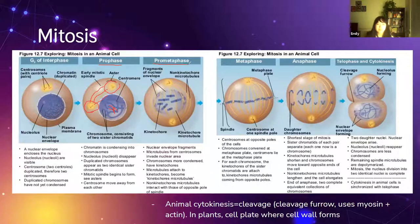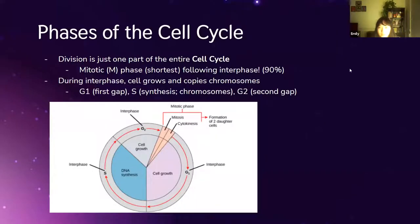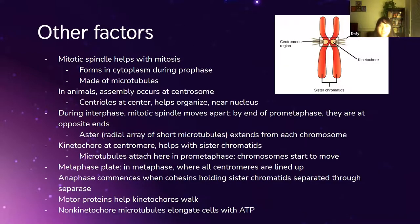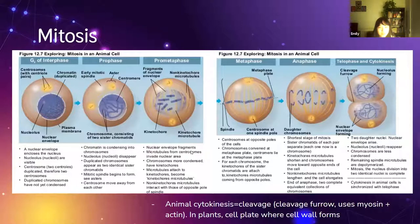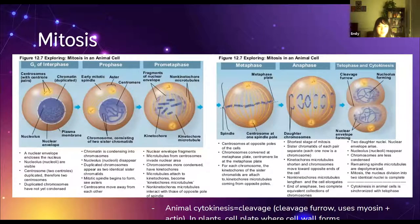In prometaphase, the centrosomes start to move to either side of the cell and the chromosomes start to line up in the middle — but not exactly, because that's what metaphase is. On the diagram there is a section called the kinetochore, which is where the spindles latch on to the chromosomes and start pulling them apart. At this point the nuclear envelope — the membrane enclosing the nucleus — starts to disappear.